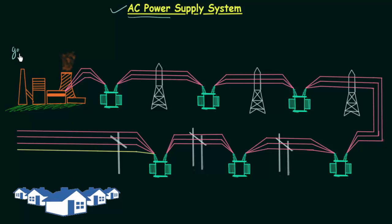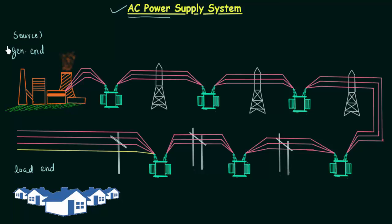This end here is the generating end — you can see a thermal power plant at this end, and power generated here is transmitted along this path to the load end. The load end in this case is a society or locality with various houses. Loads are of different types: industry, college, hospital, or market. The generating end is the source end, as it is the source of electrical energy. We are burning coal to produce electricity — so this is the source and the houses are the load.